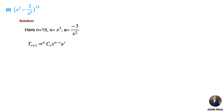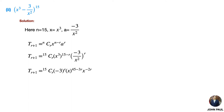Using the general term formula, substitute n, x, and a values, then simplify. By grouping the x power term separately we get 15Cr · (−3)^r · x^(45−5r).